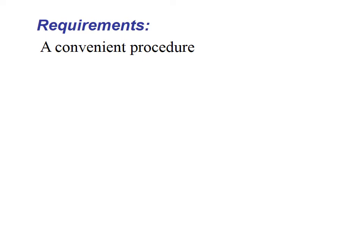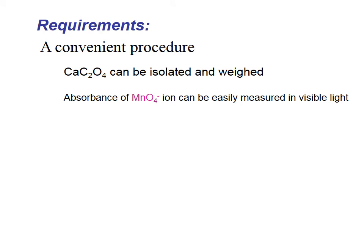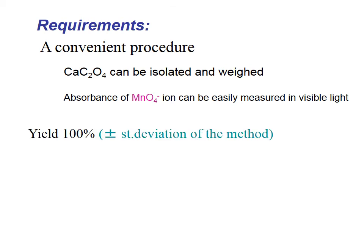What are the requirements for such procedures? First, it should be a convenient procedure — I should use instruments that are available in my laboratory and that are not expensive or elaborate. For example, calcium oxalate can be isolated and weighed, so I need balances and filters. Absorbance of permanganate can be easily measured in visible light, so I need only an inexpensive photometer.